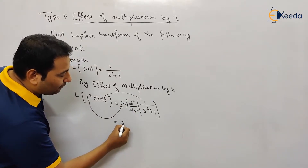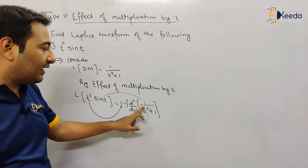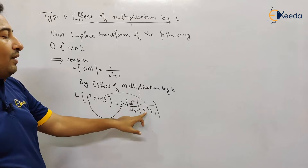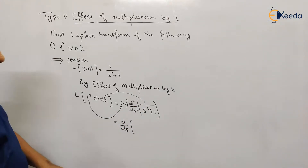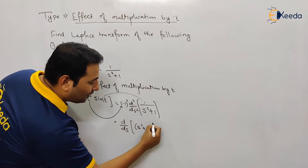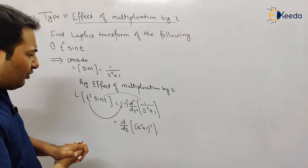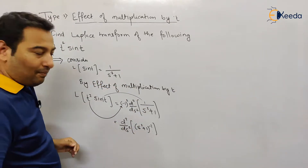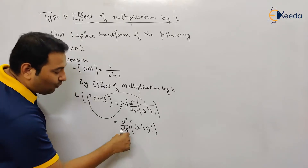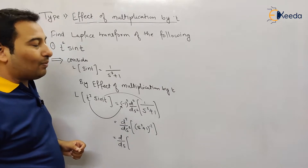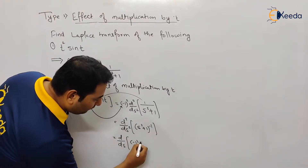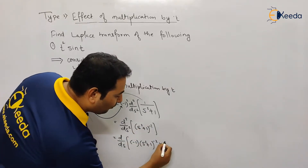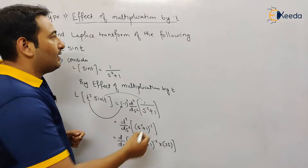Let's solve the first derivative out of two. I'm taking one derivative and applying it: we have 1/(s²+1), which can be written as (s²+1) raised to minus 1. Using chain rule — fx raised to n gives n·fx raised to n−1 times derivative of fx — the derivative of (s²+1) is 2s. So the first derivative gives minus 2s upon (s²+1) squared.